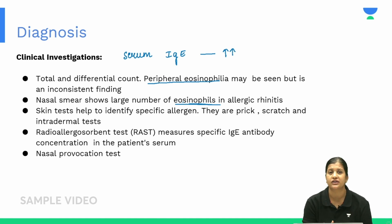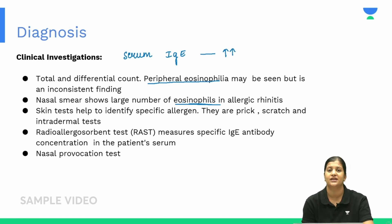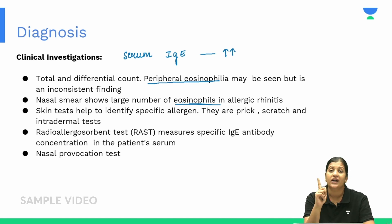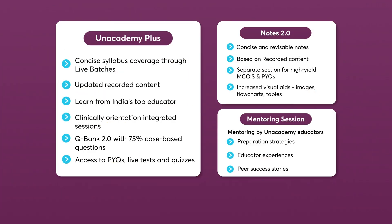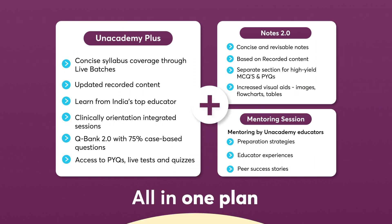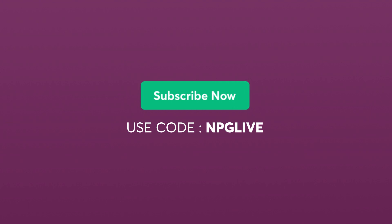IgE and eosinophil levels confirm allergy but do not identify the specific allergen. To identify the exact allergen, two tests are used: the skin prick test and the radioallergosorbent test (RAST).